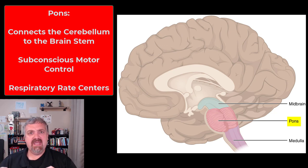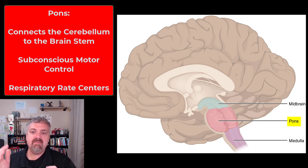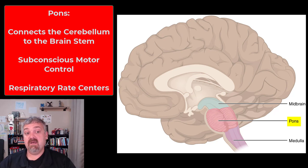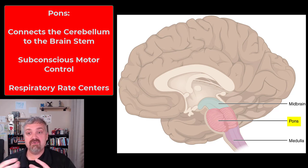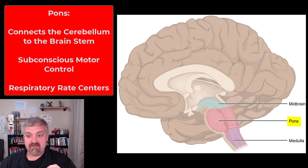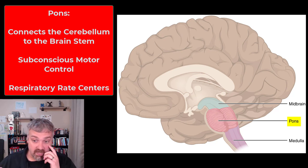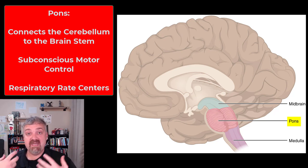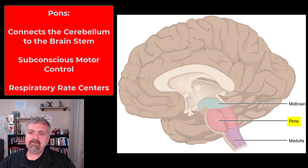The pons is what connects the cerebellum to the rest of your nervous system. There are fibers and tracks going to and from the cerebellum that travel up to the cerebrum, across to the brain stem, and down to the rest of the body. So the pons is a relay center between the cerebellum and the rest of your nervous system. The other key thing I think of with the pons is the respiratory rate centers. The medulla oblongata tells you to breathe in and breathe out; the pons tells you if you should be breathing faster or slower, and that's primarily controlled by carbon dioxide levels. If you have too much CO2, the pons will sense that with chemoreceptors and tell you to breathe faster to blow it off. If you have too little, your breathing will slow.